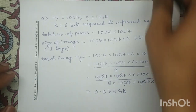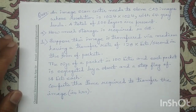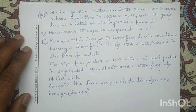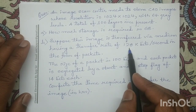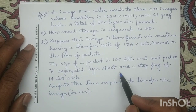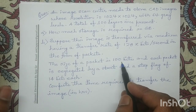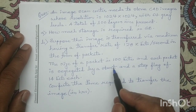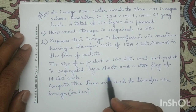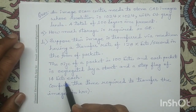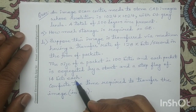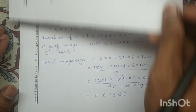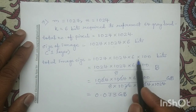Now we will solve Part B, where we have to determine the time required to transfer this image. The transmission speed is 128 kilobytes per second. The configuration of the packet is also given: each packet consists of 100 data bits and is segregated by a start flag and a stop flag, each consisting of 14 number of bits. So other than 100 data bits, there are 14 start bits and 14 stop bits present in each packet.